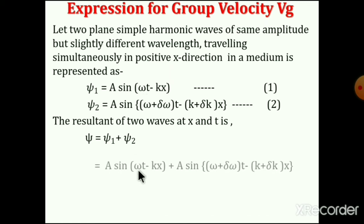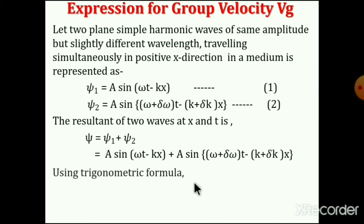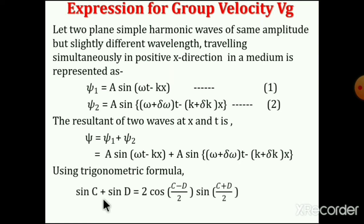Substituting ψ₁ and ψ₂ and applying the trigonometric formula sin C + sin D = 2 cos[(C−D)/2] · sin[(C+D)/2], we simplify the resulting expression.